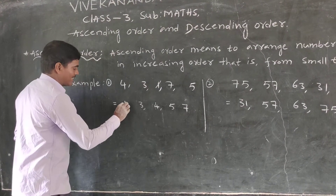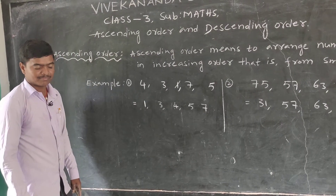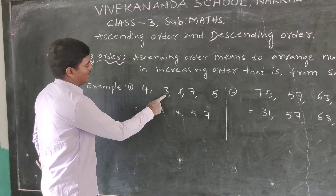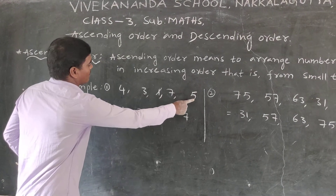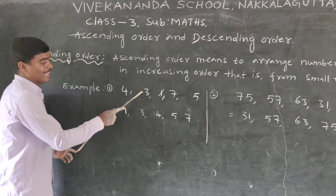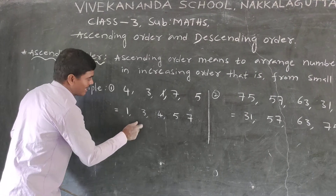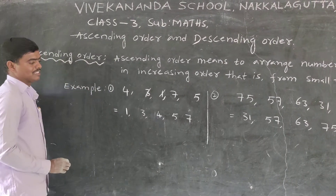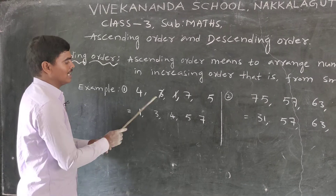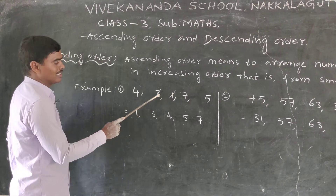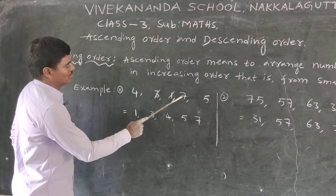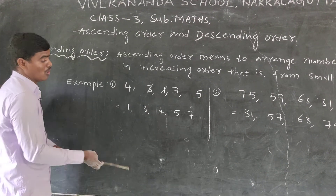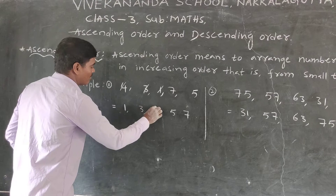Cancel 1 with a line. The second smallest number from the remaining — 4, 3, 7, 5 — is 3. Cancel 3. The third smallest number from 4, 7, 5 is 4. Cancel 4. Next is 5, then 7.